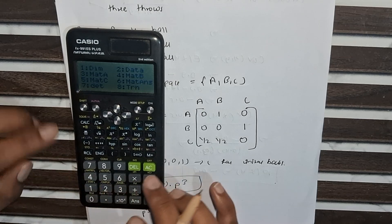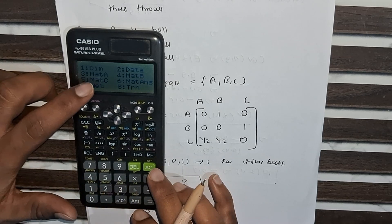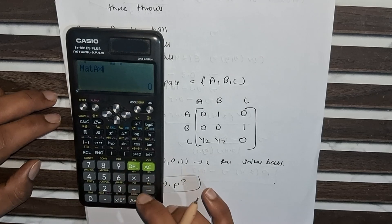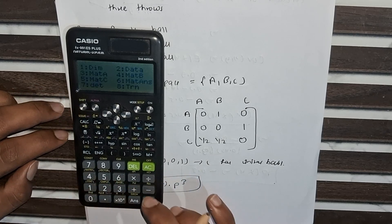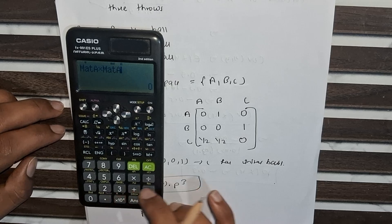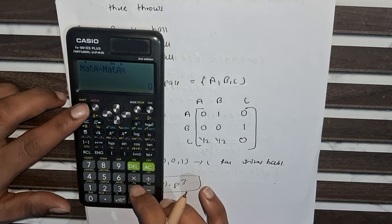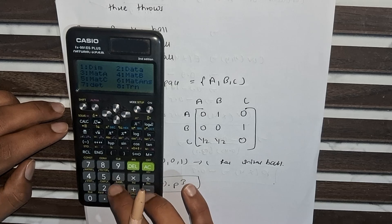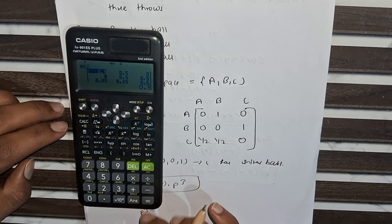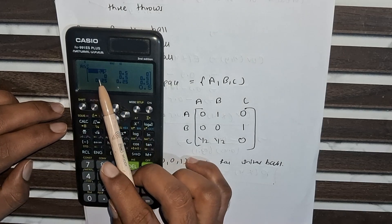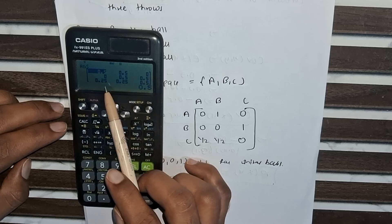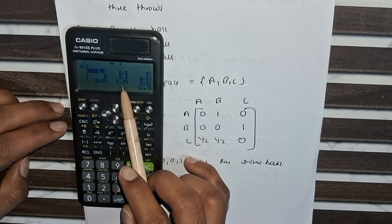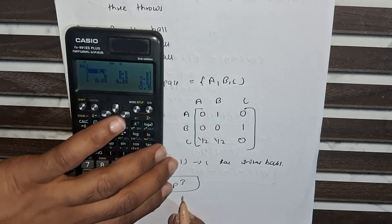After pressing AC, press Shift, then 4 for matrix. Select matrix A, then multiply: Shift → Matrix A, multiplied again by Shift → Matrix A — that is A × A × A, which gives us P³.